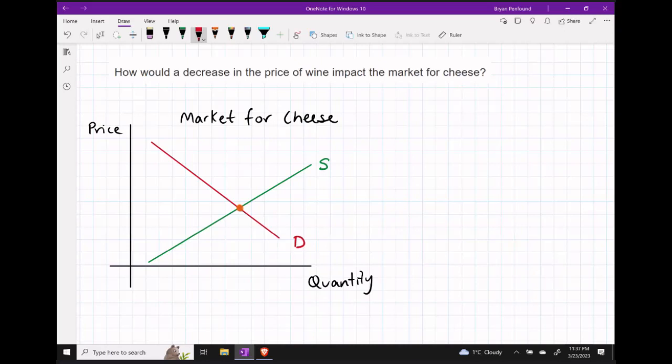Well, it's likely that a decrease in the price of wine is going to cause people to buy more wine. And if we believe that people enjoy having wine and cheese at the same time, we could probably argue that the decrease in the price of the wine is going to cause a higher demand for cheese.